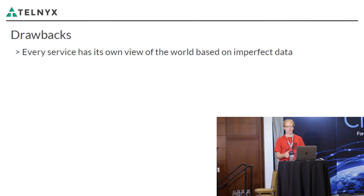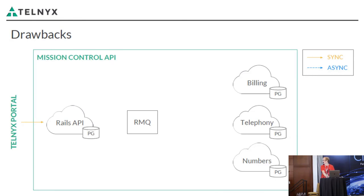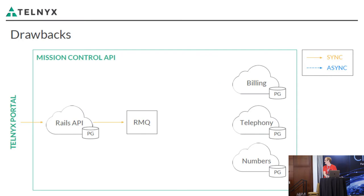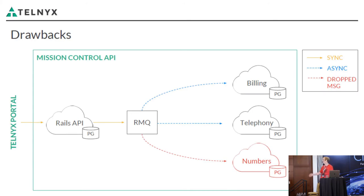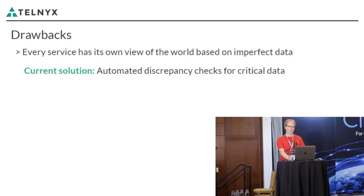Another drawback is that every service has its own view of the world based on imperfect data. In the illustration, a number order comes in, hits the Rails API, RabbitMQ, billing, and telephony — but for whatever reason, the message dropped and never got reflected in the number service. Now the numbers inventory is wrong and might return that number in search results even though someone already owns it. Our current solution is automated discrepancy checks and manual intervention.